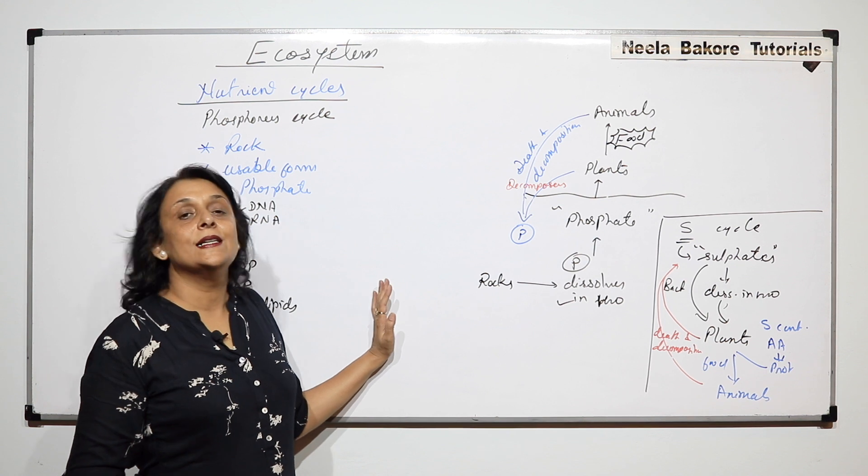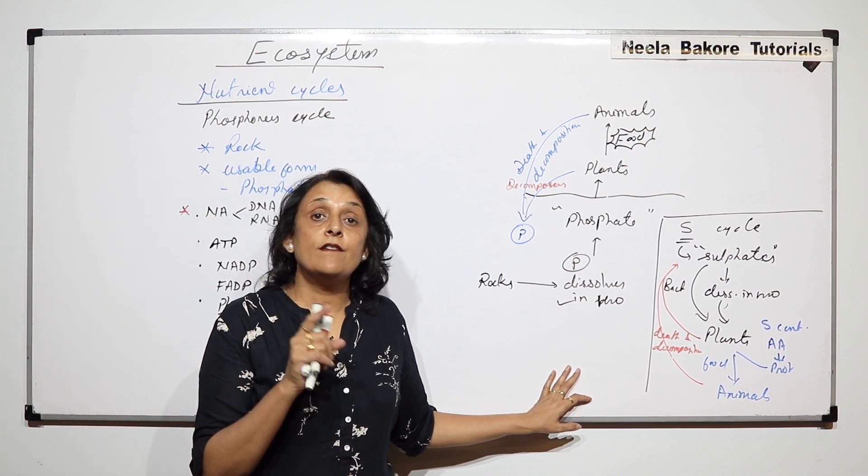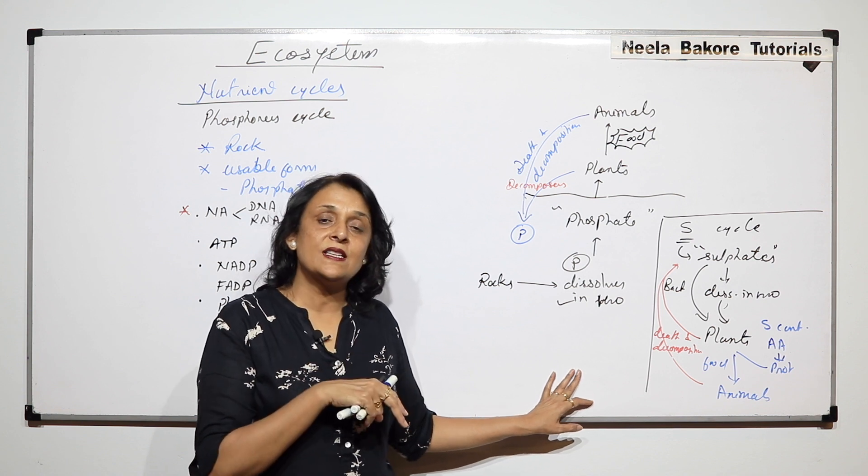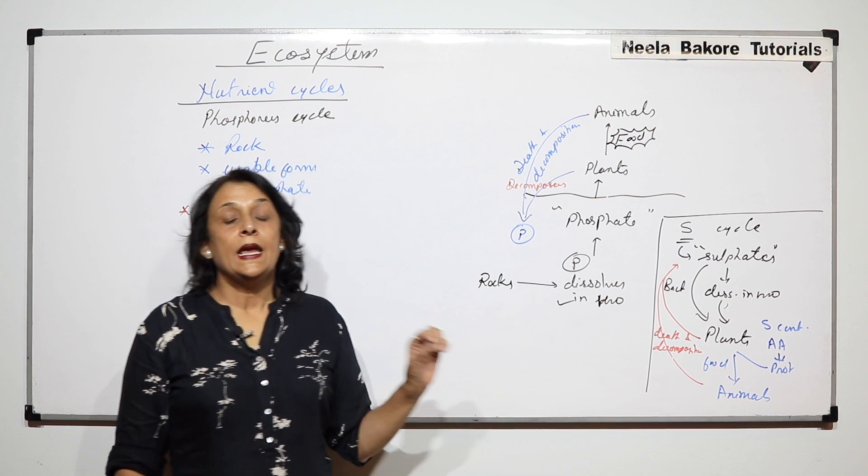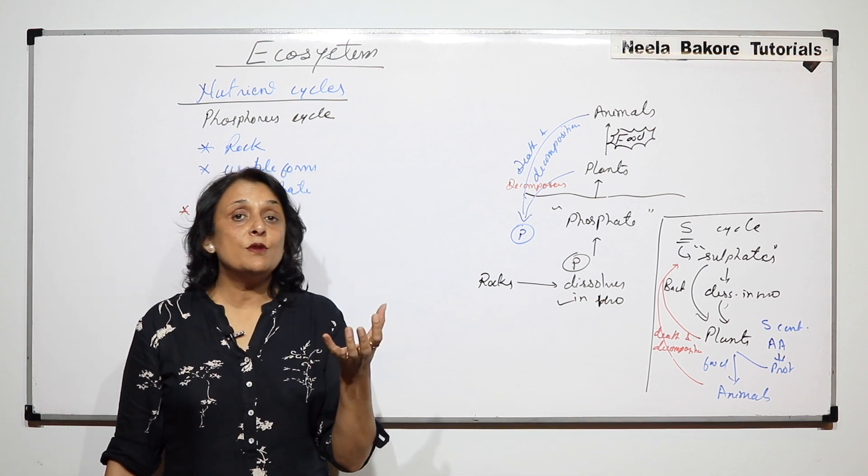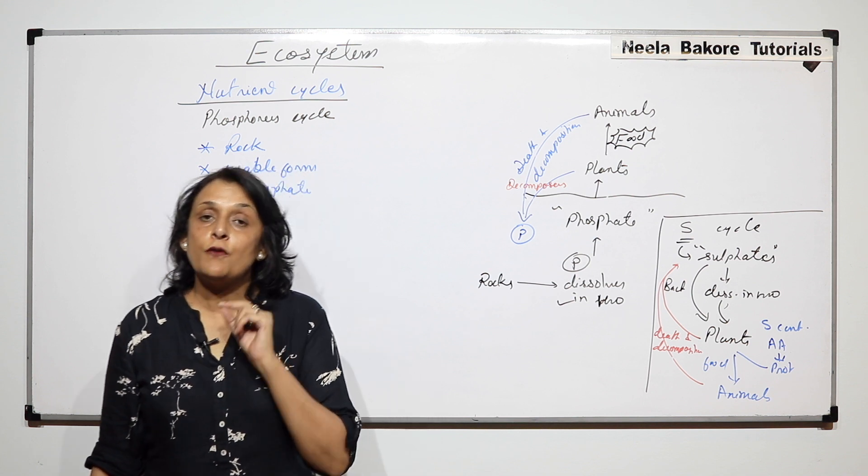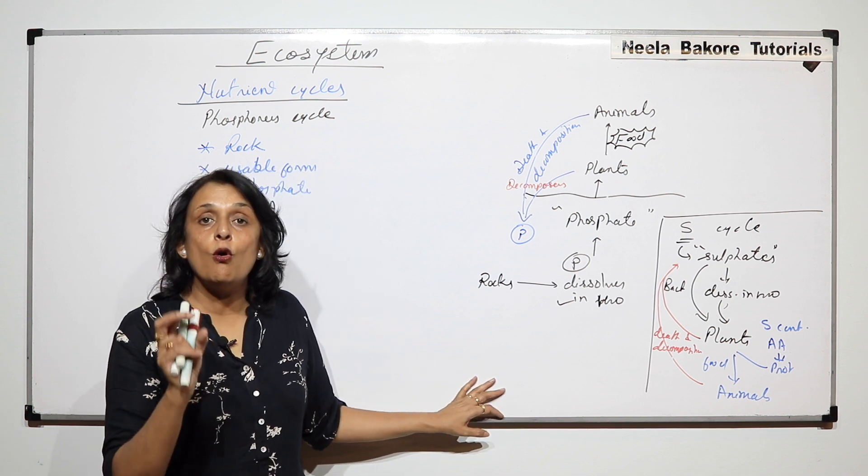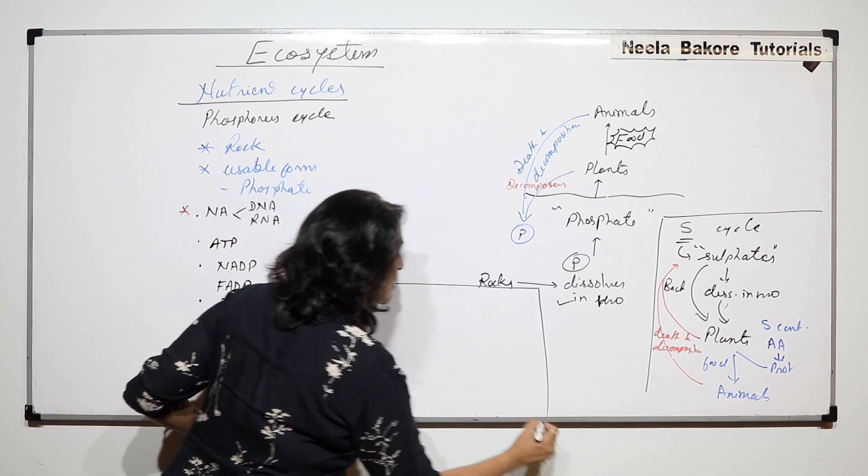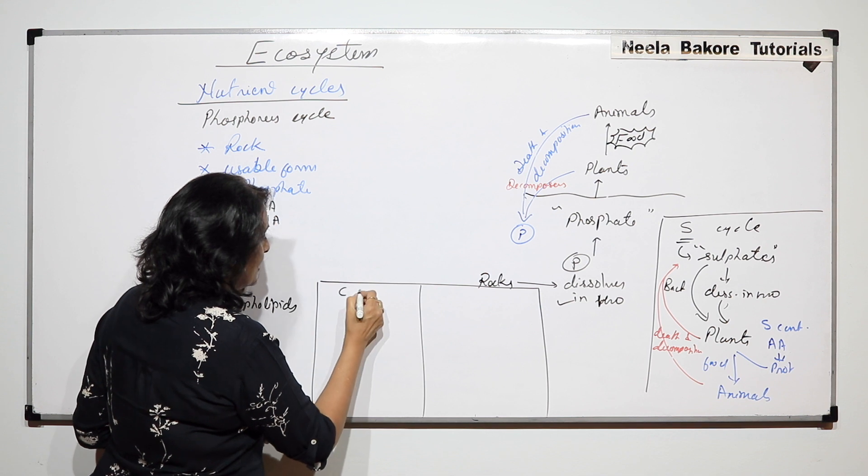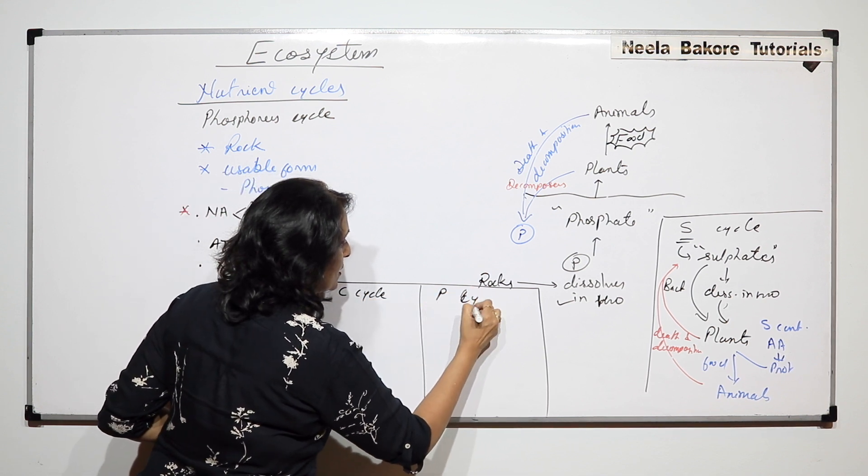Both these cycles, phosphorus cycle and sulphur cycle, are pretty much the same. But if we compare carbon cycle and phosphorus cycle, there are two main differences. In case of carbon cycle there is atmospheric input which is available. In case of phosphorus cycle there is no atmospheric input.